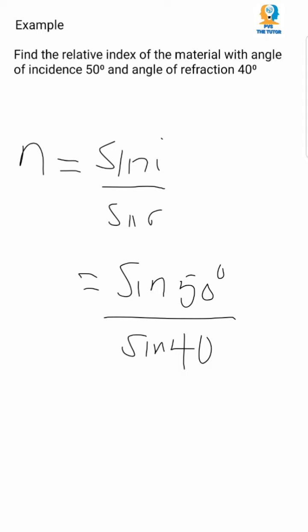So we know that the refractive index is equal to sine i over sine r. Now we need to say sine of incidence, that is 50 degrees, over sine 40 degrees. Therefore, you need to punch in the values and you're going to have n equal to 1.19.